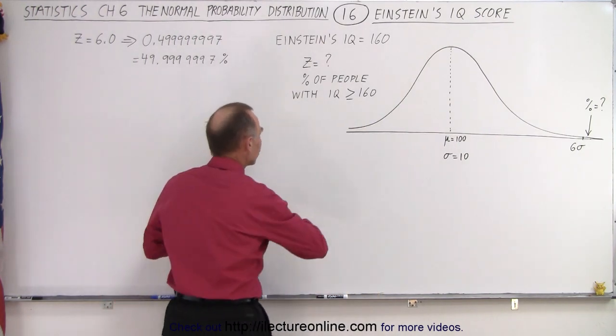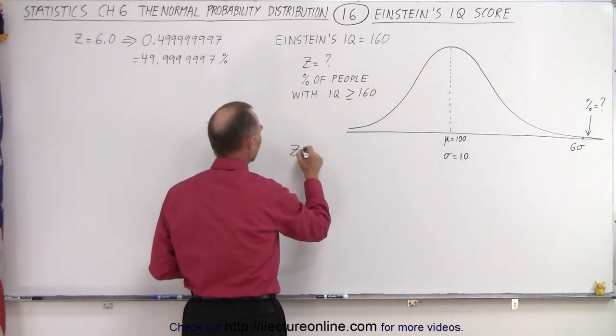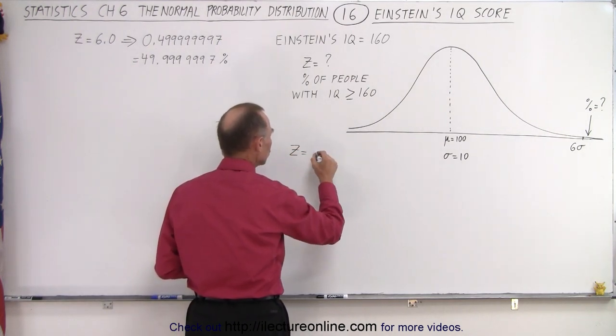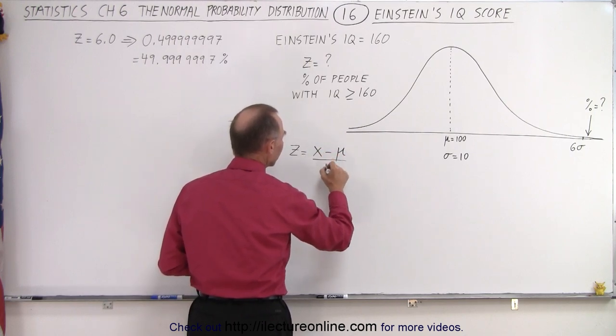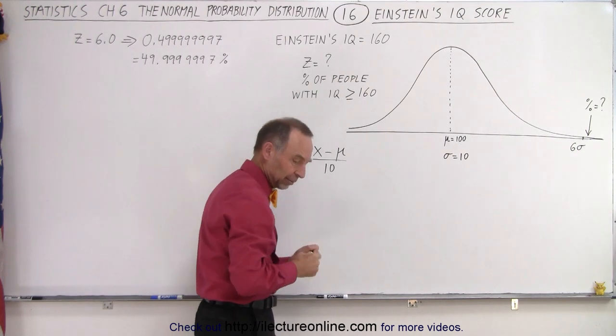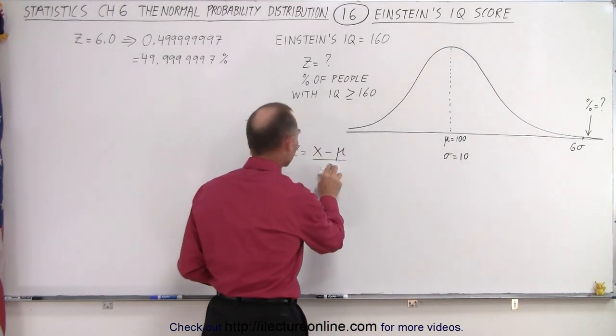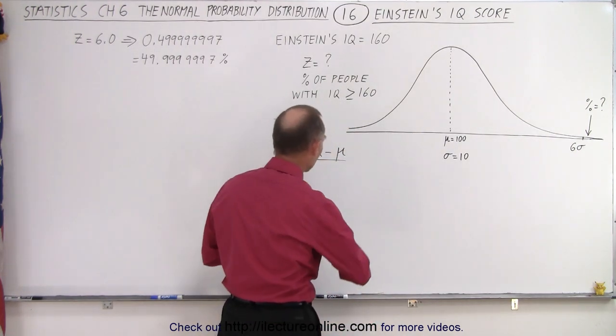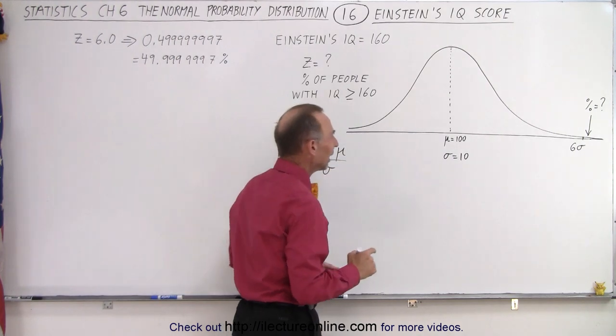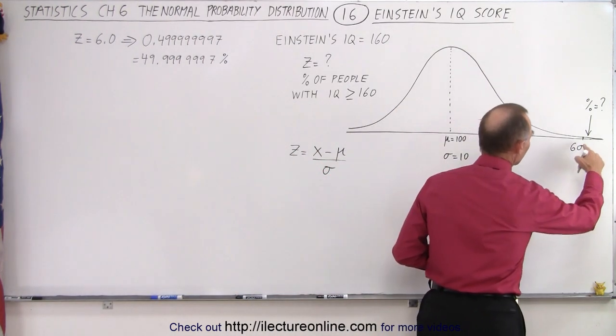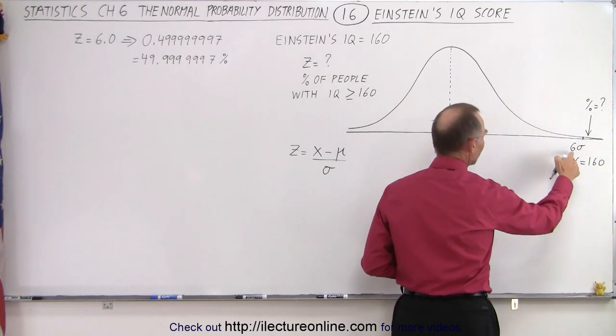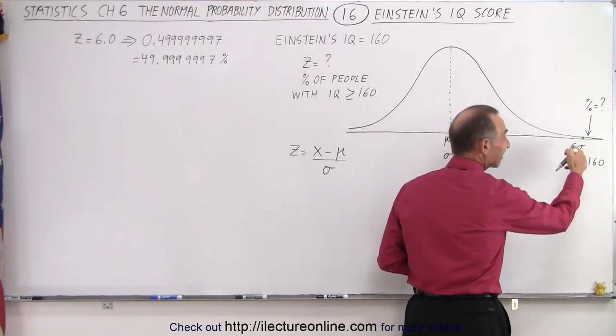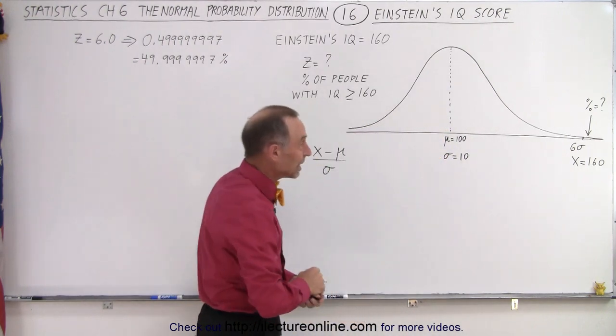So let's use our equation. What is the Z factor equal to? Z is equal to X minus the mean divided by the standard deviation. Of course, I'm getting ahead of myself. I'm plugging in the value for the standard deviation, but let's just write the equation down. And notice, we're looking for X equal 160.